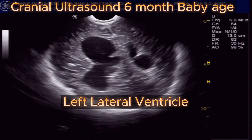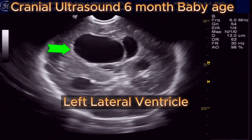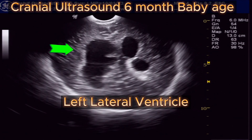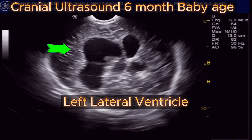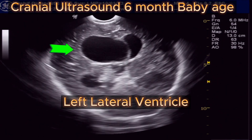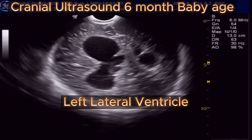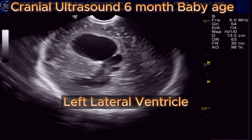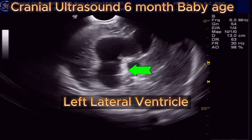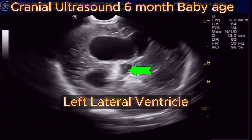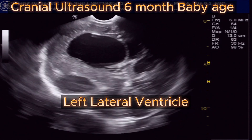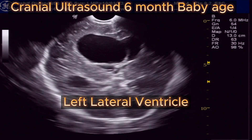We can see asymmetrical ventricle dilatation, more on the left side. The left frontal horn of the lateral ventricle is grossly dilated — this is 37 mm — with pushing effects on the midline and on the other side. We can see lobulated wall margins and fine strands along the medial wall of the lateral ventricle.